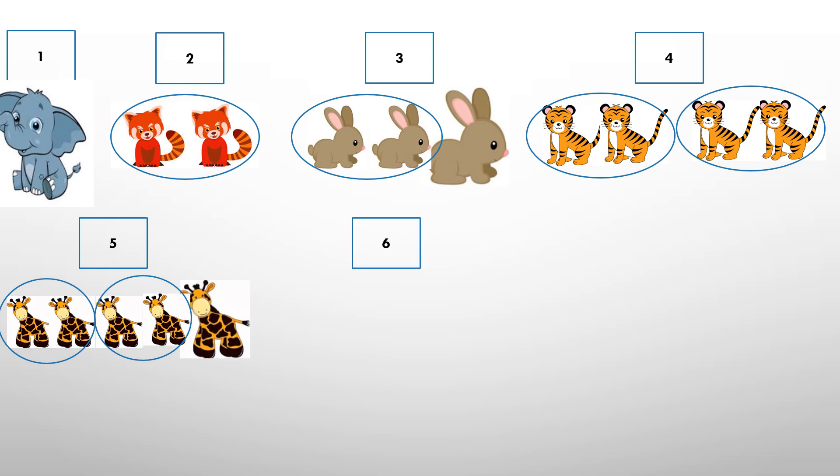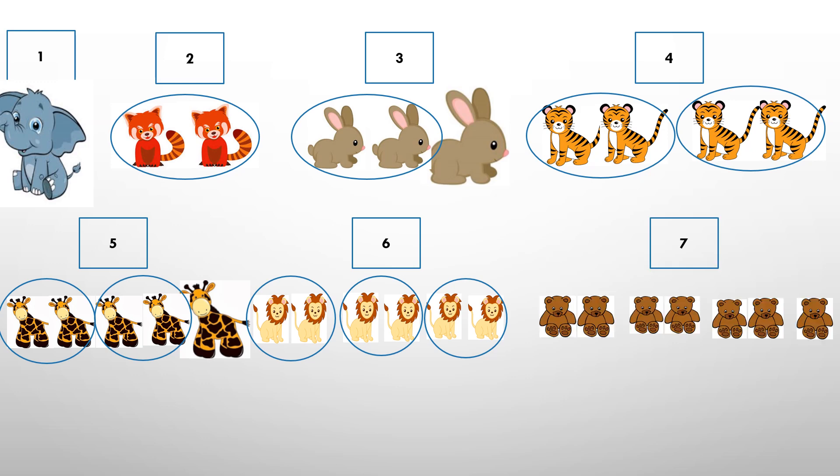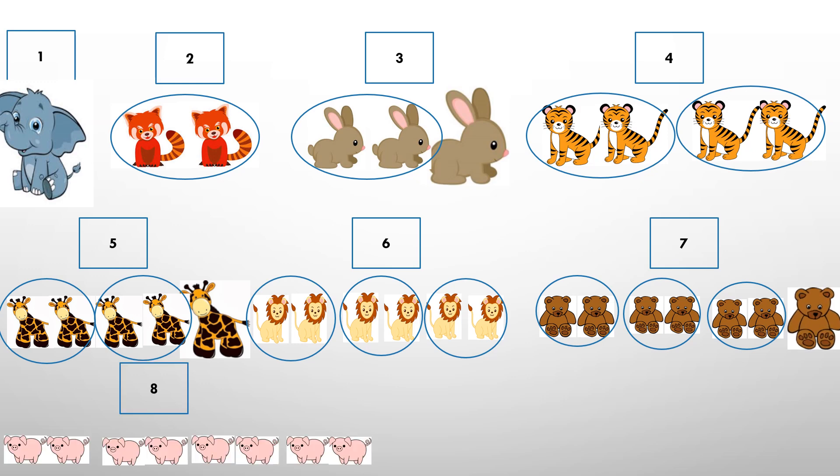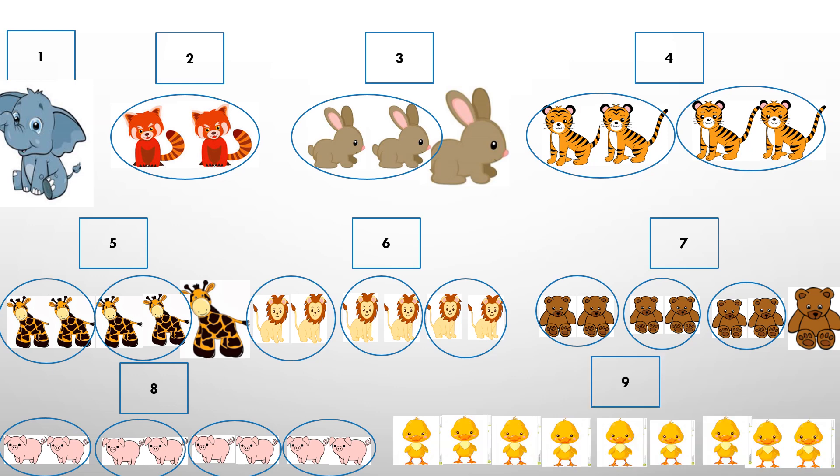And for five, there's one giraffe left out. For six, there are no lions left out. For seven, there's one teddy bear left out. For eight, there are no pigs left out. For nine, there's one duckling left out.